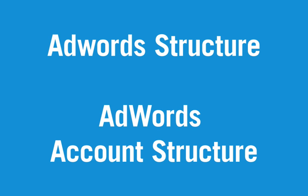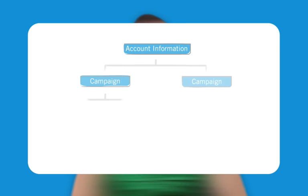AdWords account structure. An AdWords account is structured like a pyramid, expanding down three levels. At the top is the account information, followed by campaigns and then ad groups.